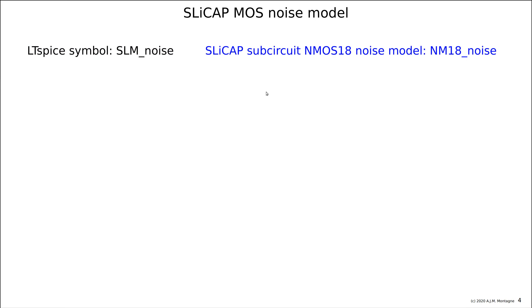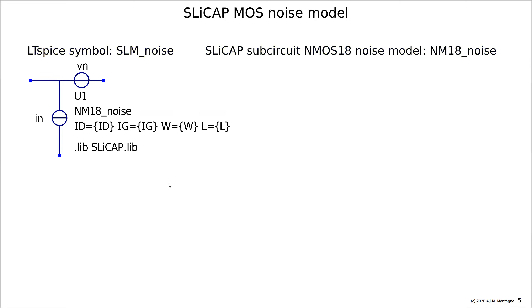There's only one subcircuit connected to this symbol? No, there are more subcircuits available. For us, the relevant one is because there is also a junction FET model available that you can use with the same subcircuit. Here we have this subcircuit: NM80, which is the NMOS 180 nanometer process noise model. It has all the parameters of the 180nm process in it. For the N device, there is also a PM18 for the noise source of a PFET.